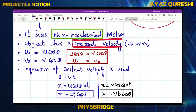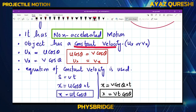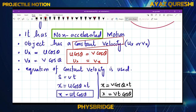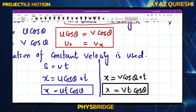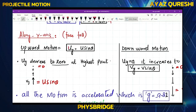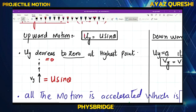Since there is constant velocity along the horizontal, we use the equation for constant velocity. Along the x-axis the equation is: x = vx·t, or equivalently x = v cosθ·t. So the equation for horizontal distance is simply x = v cosθ × t.